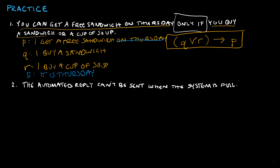With the alternative propositions, I would write: if it is Thursday and I buy a sandwich or a cup of soup, then I get a free sandwich. So you can see I did it two different ways and both are just fine — it really depends on how you assign your propositions, which is why I always want to see you explicitly write them out.